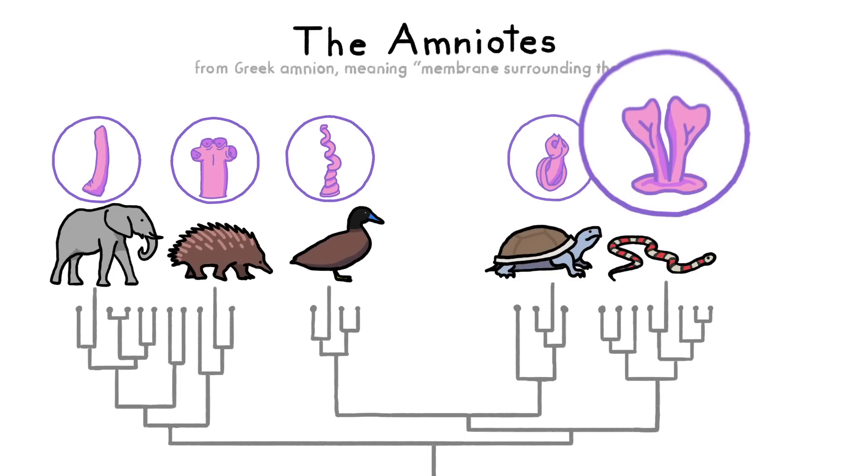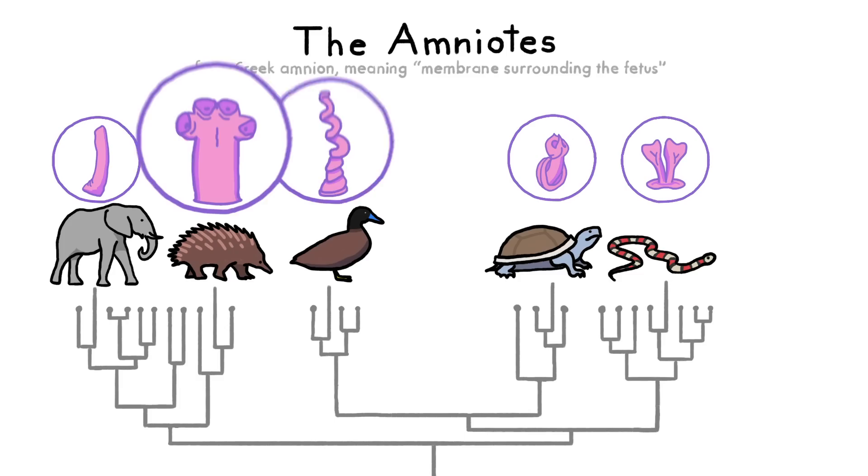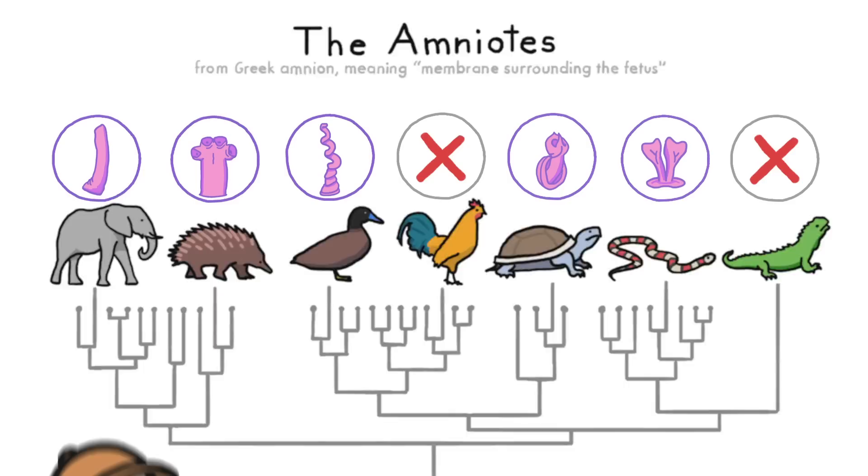And these are their penises. As you can see, these sperm delivery devices are incredibly diverse, from the snake with its hemipenies, to the lake duck with its giant corkscrew, to the echidna with its four-headed organ.